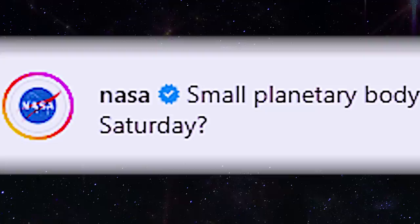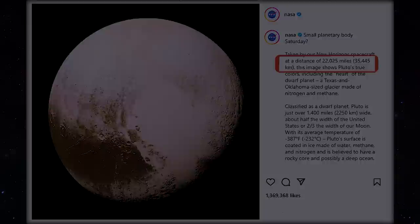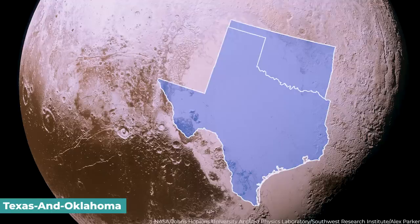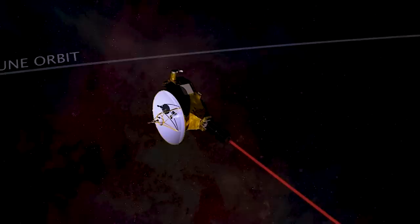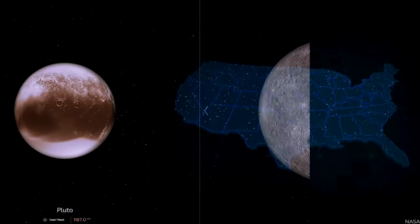The space agency tweeted the image of Pluto captioning it, small planetary body Saturday. Taken by our New Horizons spacecraft at the distance of 22,025 miles, this image shows Pluto's true colors, including the heart of the dwarf planet, a Texas and Oklahoma-sized glacier made of nitrogen and methane. New Horizons is the first spacecraft to visit Pluto, orbiting at 3.7 billion miles. Pluto is slightly over 1,400 miles broad, almost half the breadth of the United States, or two-thirds the width of the Moon.